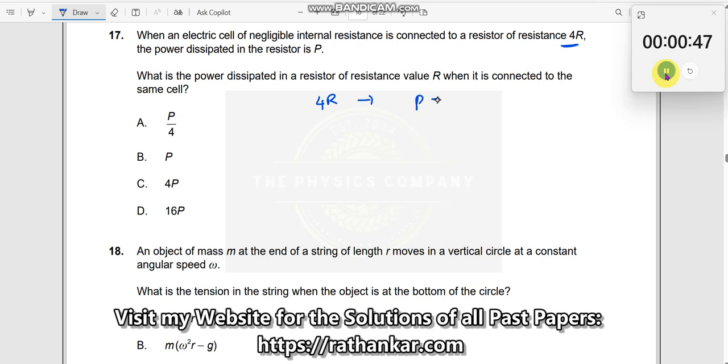How do you relate this? P is equal to V square by 4R. This is what we got. What is the power dissipated in the resistor of resistance value R? So I have reduced the resistance now. What will be the power?